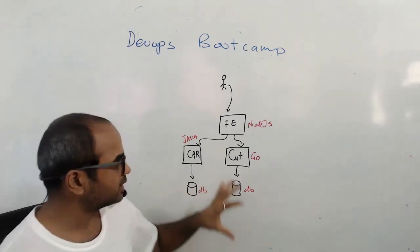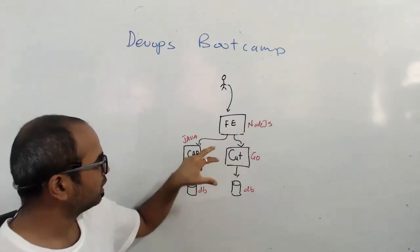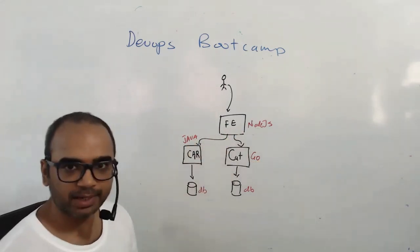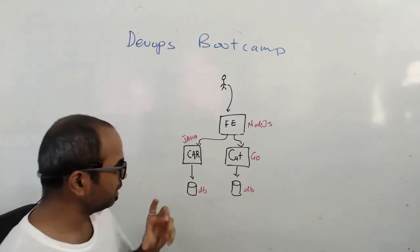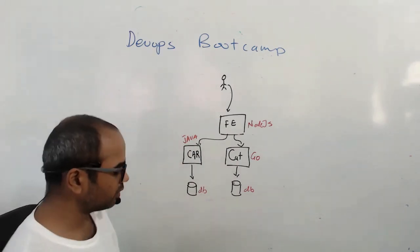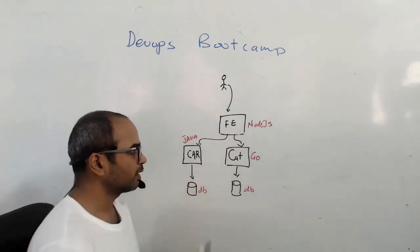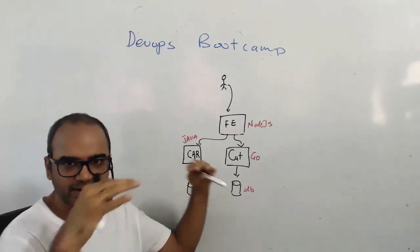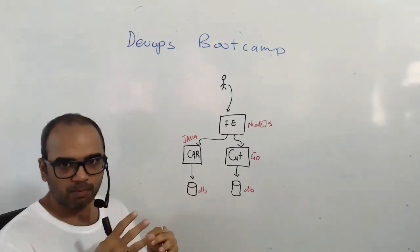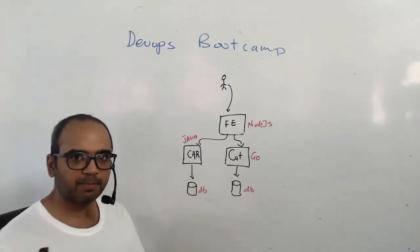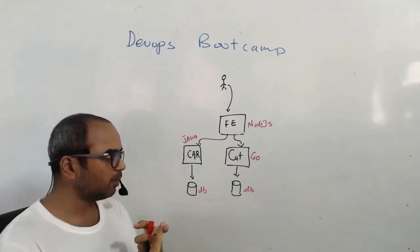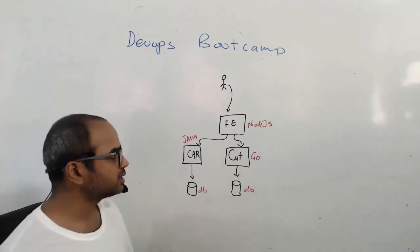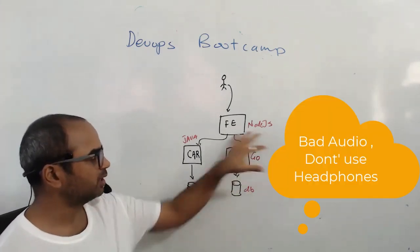Your task is to start setting up a continuous integration workflow for these two applications. One Node application, second is the Java application. What is the purpose? Purpose is simple. Whenever a developer checks in the code for the Node application or writes code and pushes it to the common Git repository, your job is to set up an automated pipeline so that a job, a sequence of jobs are run to test that code.